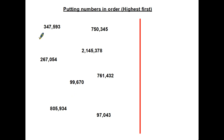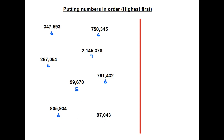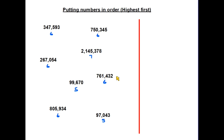A good idea is to start sorting them depending on how many digits are in each one. This one has six digits, this one also has six, as does this one. This one however has seven. This one has five, another one here with six, and the bottom one has five.